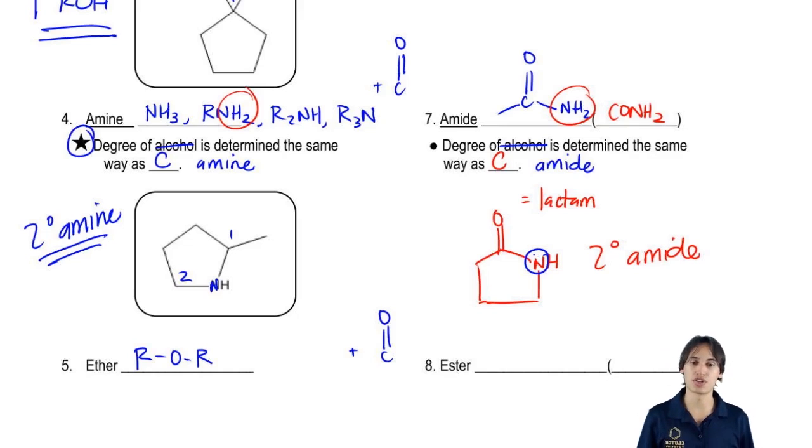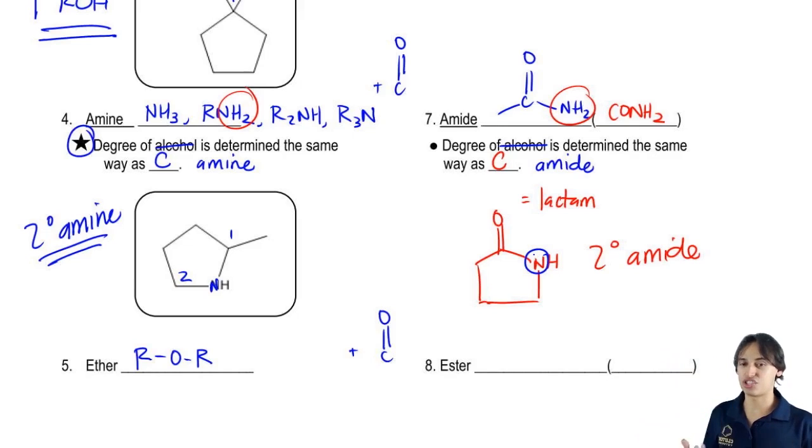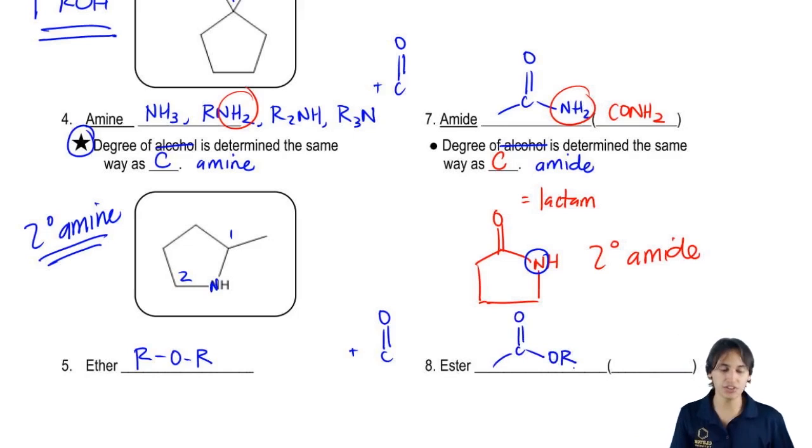Cool. And then we've got this last one. I'll try to move out of the way a little bit. So we've got ester. Ester is what forms when you add a carbonyl and then you just take the OR from the ether group. So isn't that cool? We get when you take an amine, add a carbonyl, it turns into an amide. Ether plus a carbonyl turns into an ester.